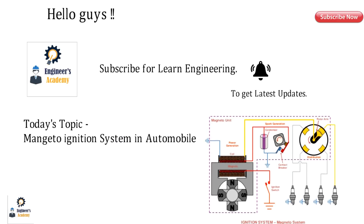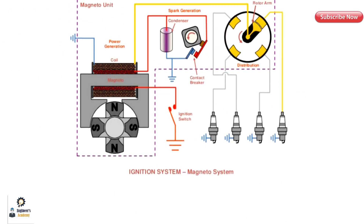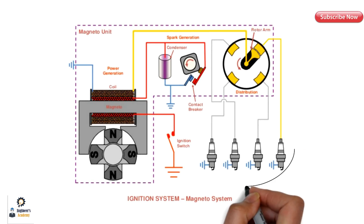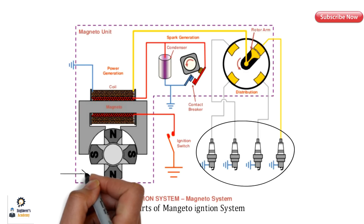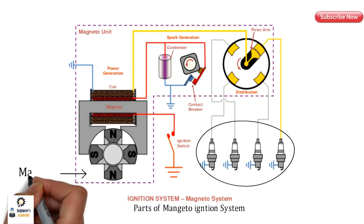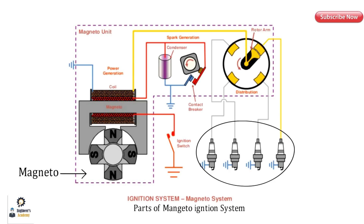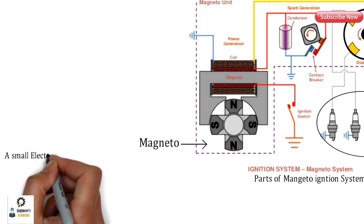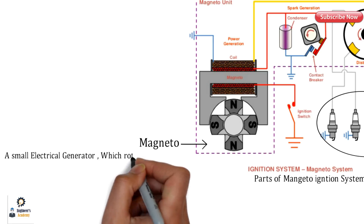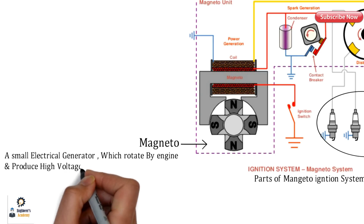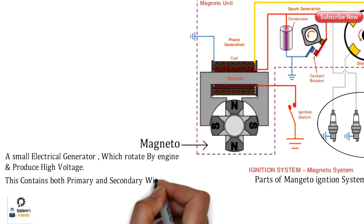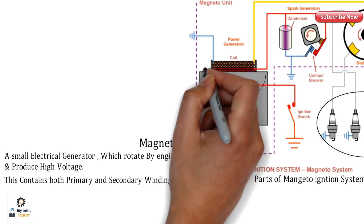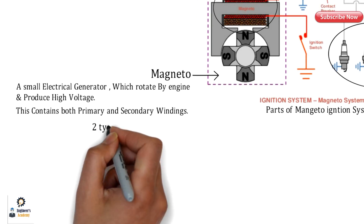This magneto type ignition system is very similar to the battery ignition system, and all parts are the same except for one difference. In the magneto type ignition system, the magneto is used to generate the electrical energy, whereas in the previous case a battery was the source. The magneto is nothing but a small electrical generator which is rotated by the engine and produces high voltages. It contains both primary and secondary windings, so there is no need for a separate ignition coil.